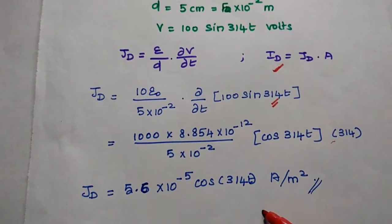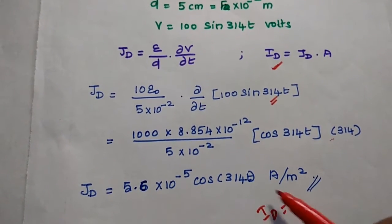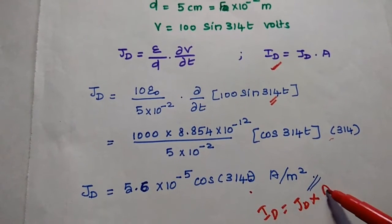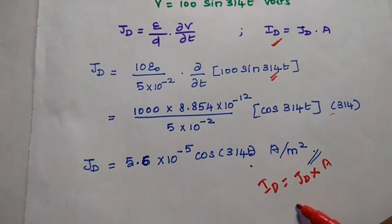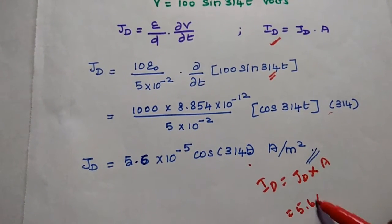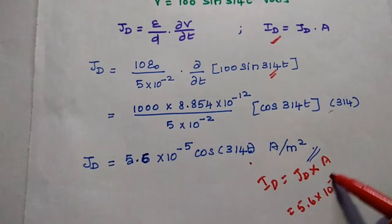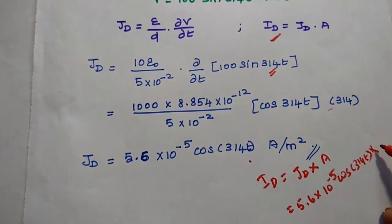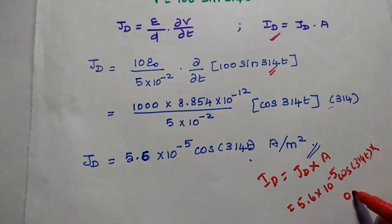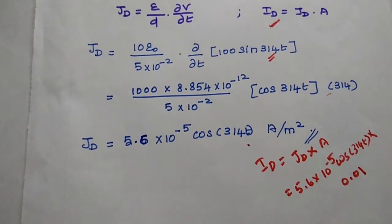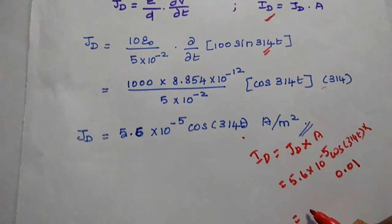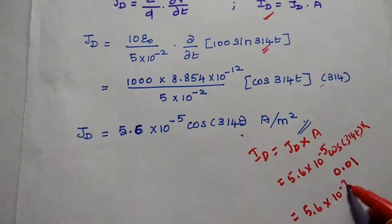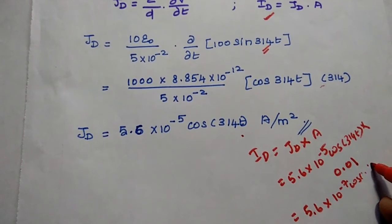If you want to find out the displacement current, we can simply multiply this Jd value with the area. So we multiply 5.6 into 10 to the power minus 5 cos of 314T by the area to get the value 5.6 into 10 to the power minus 7 cos of 314T.